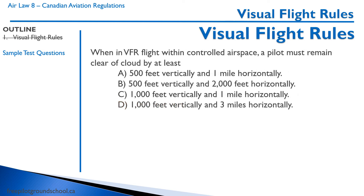Now, controlled airspace: when VFR flight within controlled airspace, a pilot must remain clear of cloud by at least — the correct answer is 500 feet vertically and one mile horizontally, so A is correct. Option B, 500 feet vertically and 2,000 feet horizontally, applies to uncontrolled airspace above 1,000 feet. The other options are also incorrect.